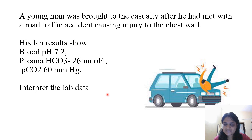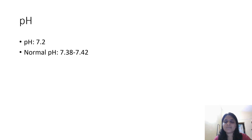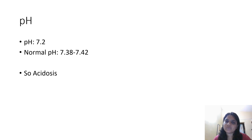In these cases, first we have to see the blood pH, then the bicarbonate and the PCO2 values. So first we check the pH. The given pH is 7.2. Normal pH ranges from 7.38 to 7.42. So it is acidic pH — there is acidosis. That is your first impression: there is acidosis.